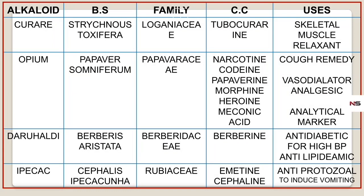The uses of Opium: Codeine is used as a cough remedy. It is also used as a vasodilator. Morphine is a very good analgesic. And it is also used as an analytical marker. So the uses of Opium are: cough remedy, vasodilator, analgesic, and analytical marker.